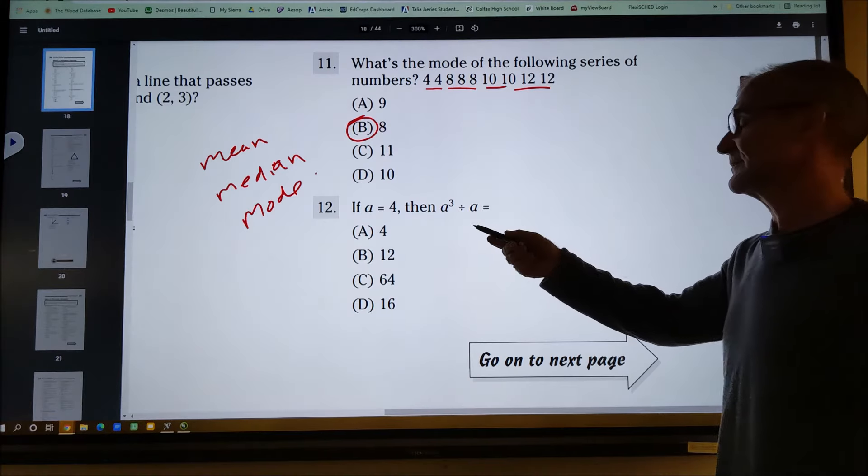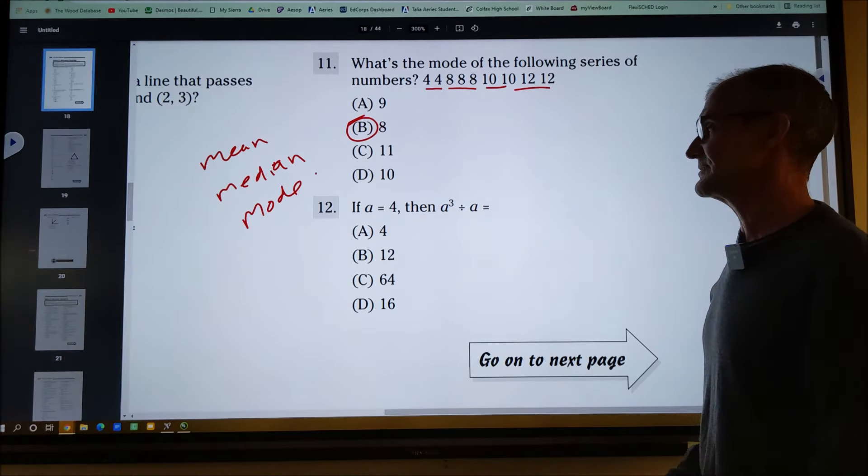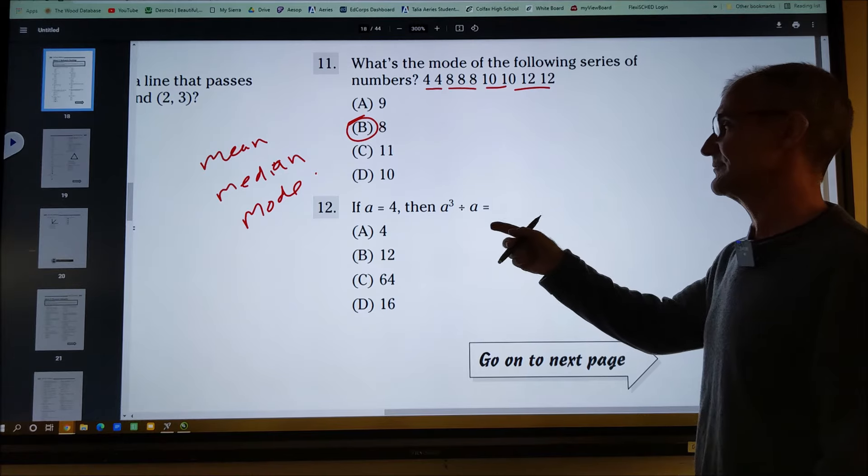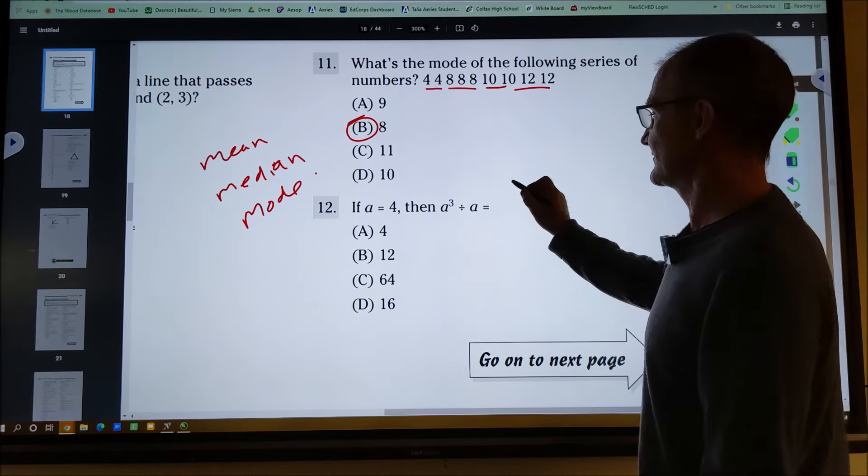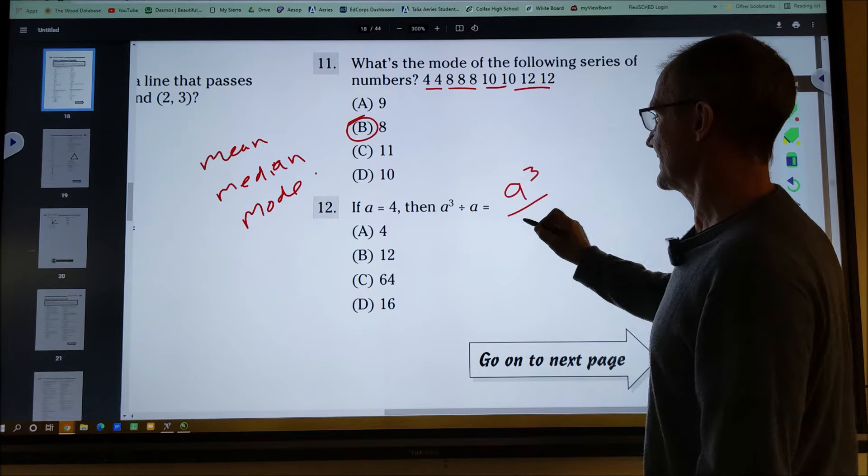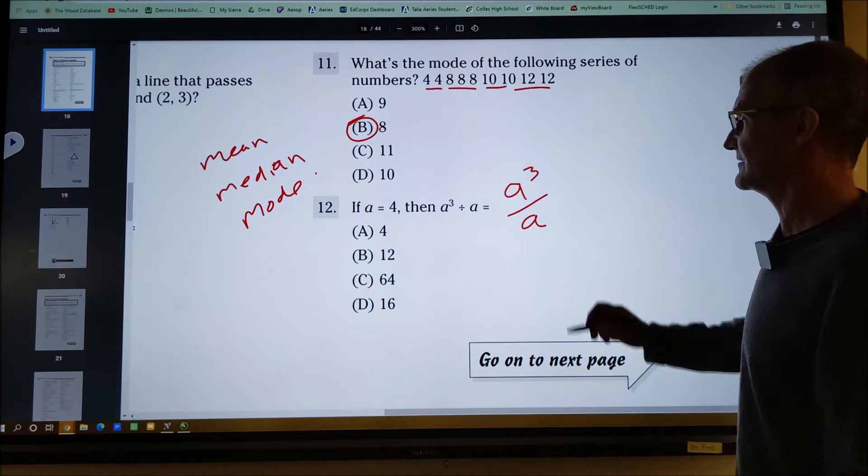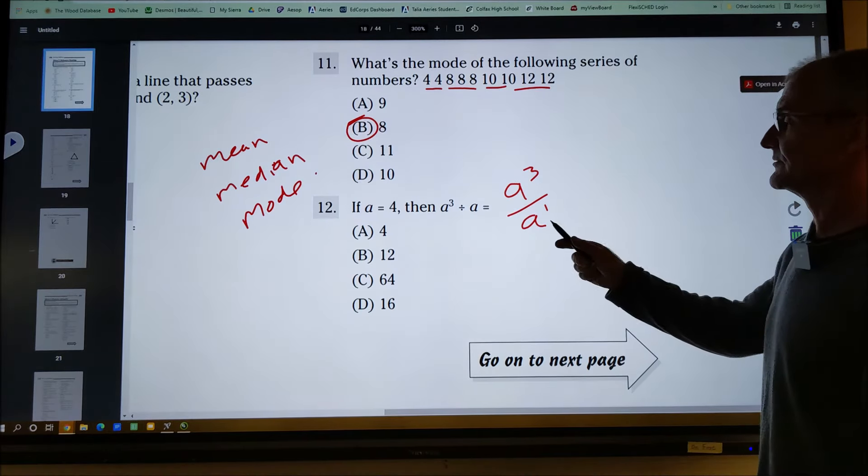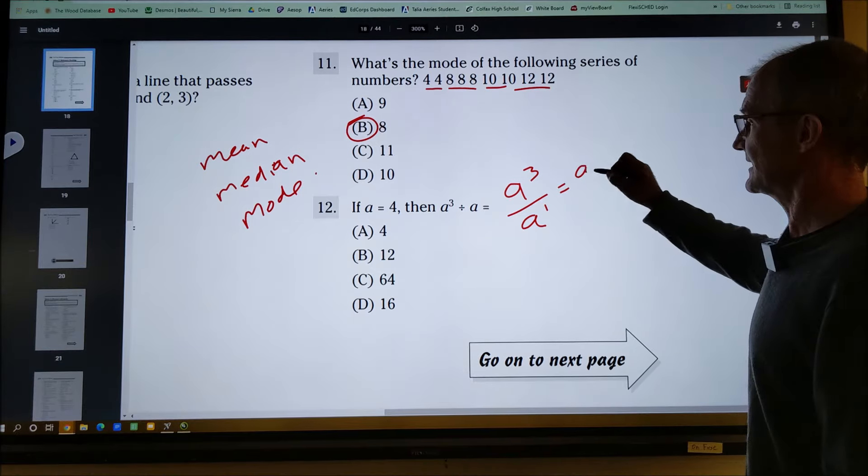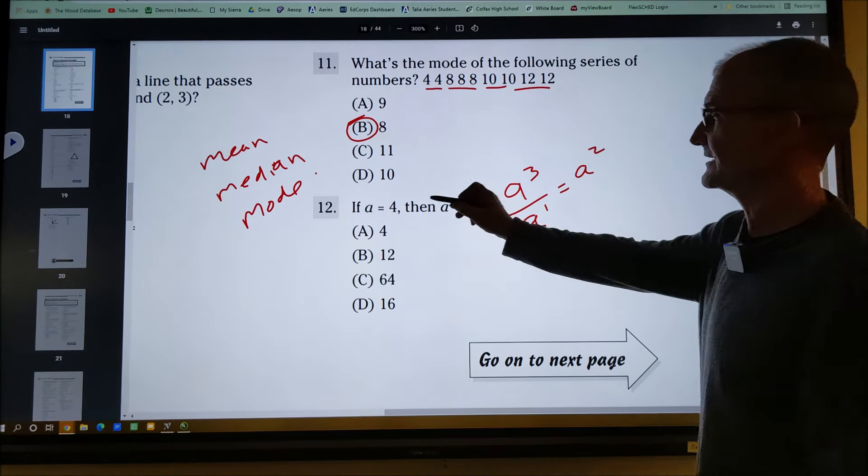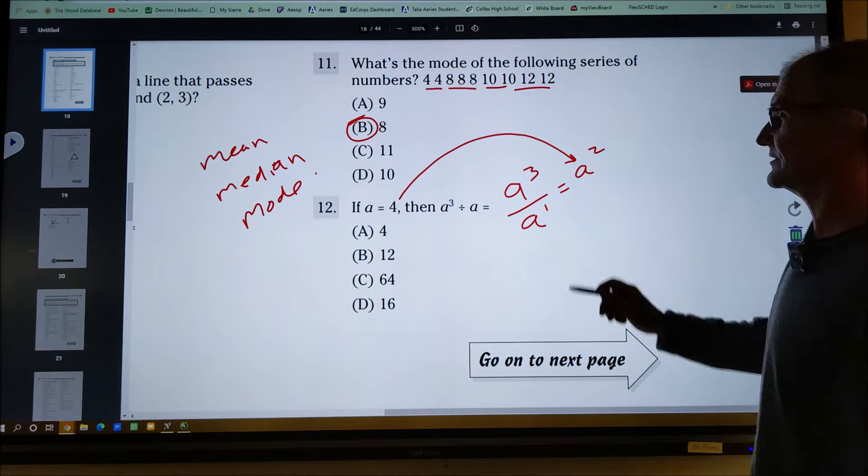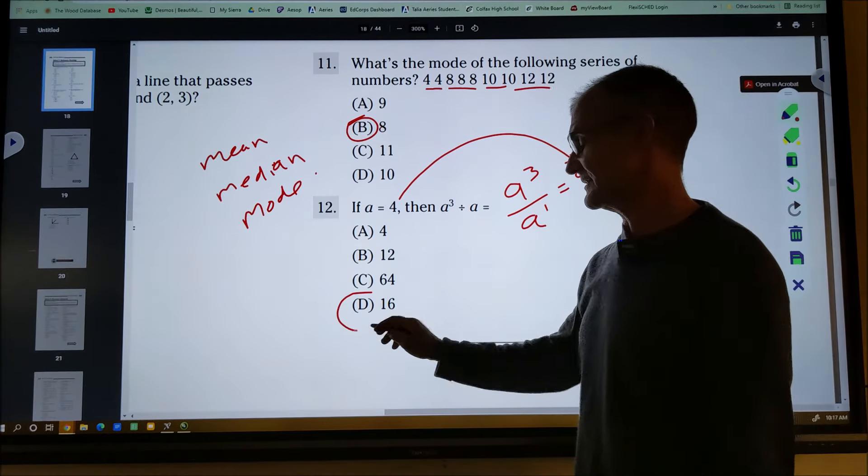This one, number 12, again, is a test on the rules of exponents. You could plug four in first, but it's going to be a lot more computation. If I do a to the third divided by a, well, that's really a to the first. I know the rules of exponents. I subtract in division to get a squared. I take that four and I plug it in there. Four times four is 16. Answer D.